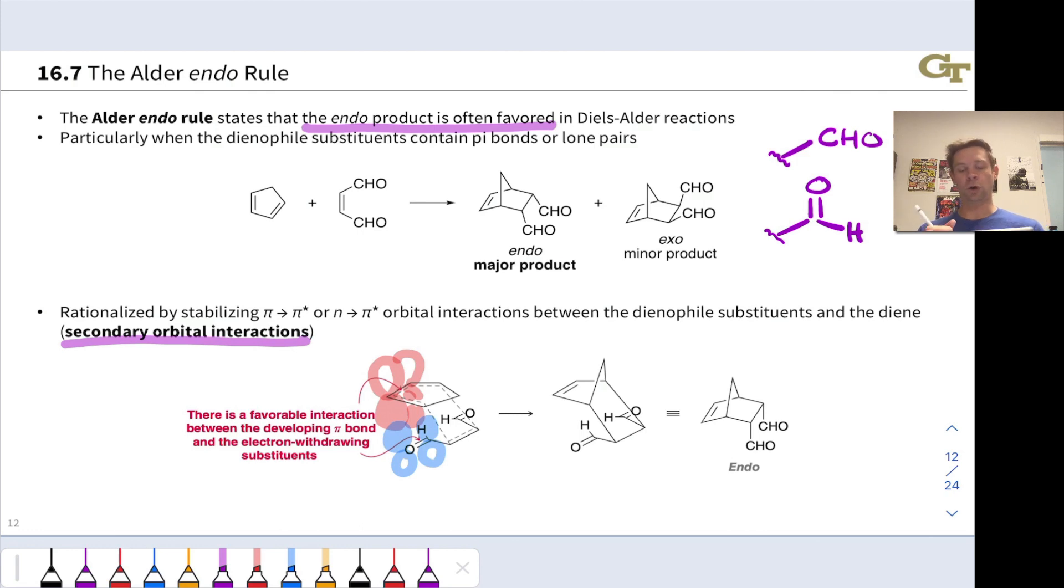This is stabilizing orbital overlap, generally from the electron-rich diene, the nucleophilic diene, to the electron-poor dienophile. And this arrangement leads to the endo product. Notice that the aldehyde groups are underneath the diene. That's the endo orientation.